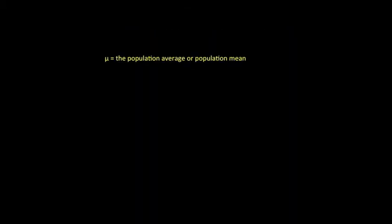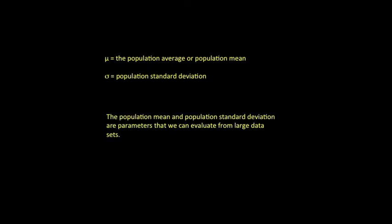So for a quick review, mu equals the population average, the average of a very large number of measurements, and sigma equals the population standard deviation. Gauss showed that the population standard deviation can be calculated from this equation, where n is the number of measurements or data points in the set.